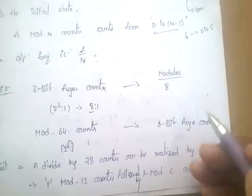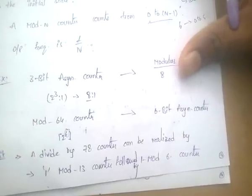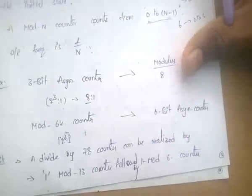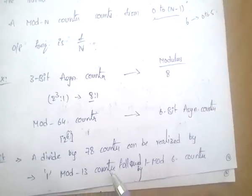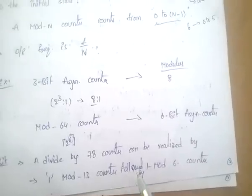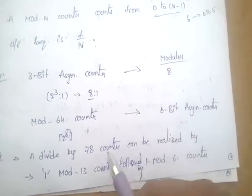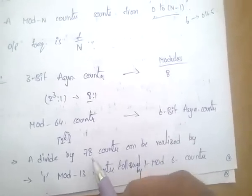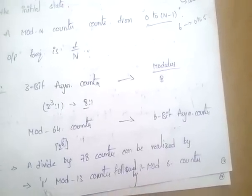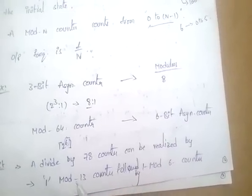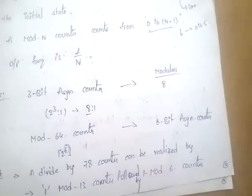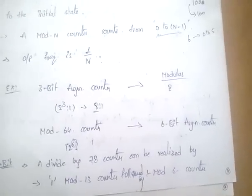A divide-by-78 counter can be realized using one mod-13 counter followed by one mod-6 counter, since 13 × 6 = 78.